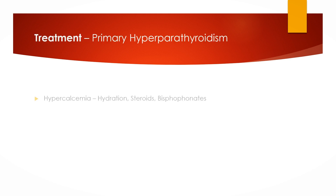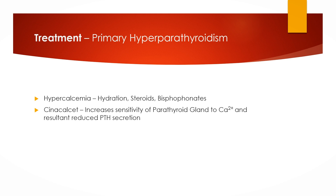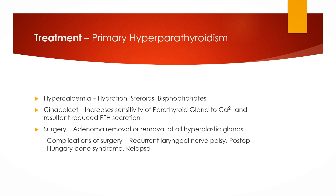In cases of primary hyperparathyroidism, symptomatic hypercalcemia shall be treated by improving the hydration of the patient. In some cases, steroids and bisphosphonates may be needed. Cinacalcet increases the sensitivity of the parathyroid gland to calcium, resulting in reduced PTH secretion. Definitive treatment is surgical — removal of the adenoma or removal of all hyperplastic parathyroid glands. Complications of surgery include recurrent laryngeal nerve palsy, post-operative hypocalcemia due to increased osteoblastic activity and intake of calcium by bone, known as hungry bone syndrome, and in some cases relapse of hyperparathyroidism.